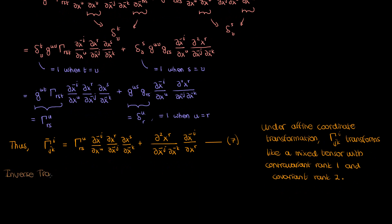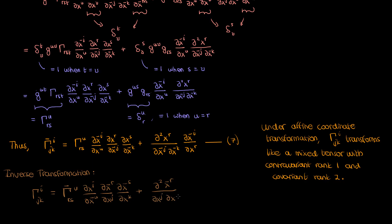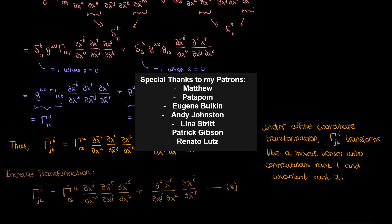When the dust settles, this is the overall transformation law for the Christoffel symbol of the second kind, which I'll call equation 7. Notice that if the mixed partial derivative is 0 — under an affine coordinate transformation — the Christoffel symbol of the second kind transforms like a mixed tensor with contravariant rank 1 and covariant rank 2, which makes sense since it has one index at the top and two at the bottom. We can also formulate the inverse transformation: going from barred back to unbarred coordinates, just change barred terms to unbarred and vice versa in equation 7, giving equation 8. So there you go — the transformation laws for both the Christoffel symbols of the first and second kind.